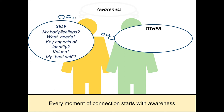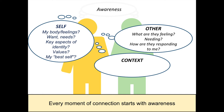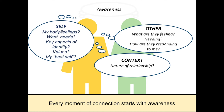Awareness also includes awareness of the other person — we toggle back and forth between self and other awareness. Other awareness is very similar to self-awareness, but just with respect to the other person: what is the other person feeling, what are they needing, and how are they responding to me? The final piece of awareness is context awareness — not just awareness of yourself and the other, but awareness of the context in which your interaction is happening. This context includes the nature of the relationship: is this a romantic relationship, is this just a friendship? Making sure you get that right, and awareness of the surroundings.